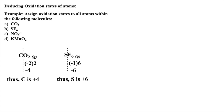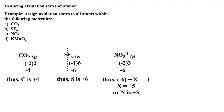For the polyatomic anion nitrate, we again know that each oxygen atom must be negative two. Thus, to deduce the oxidation state of nitrogen, it may help to think of this as negative six plus the oxidation state of nitrogen equals negative one. Thus, nitrogen must have an oxidation state of plus five.